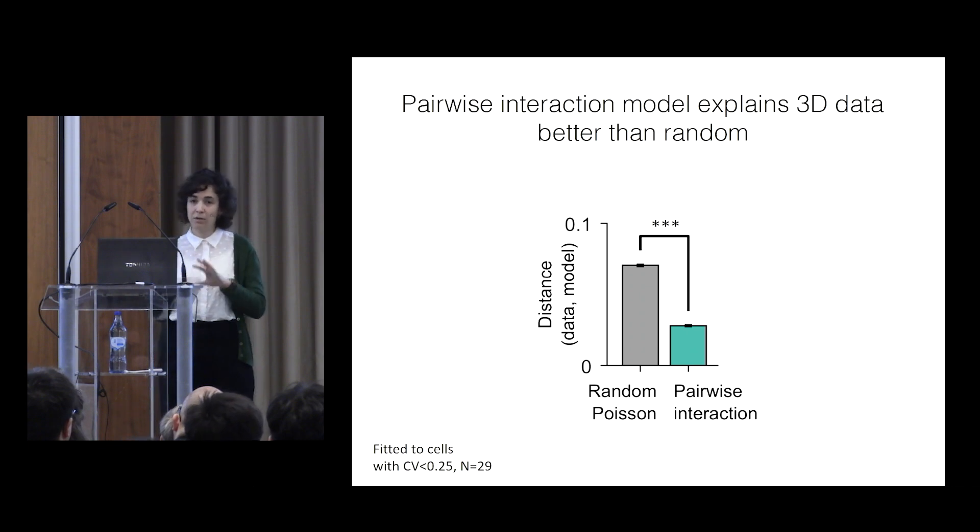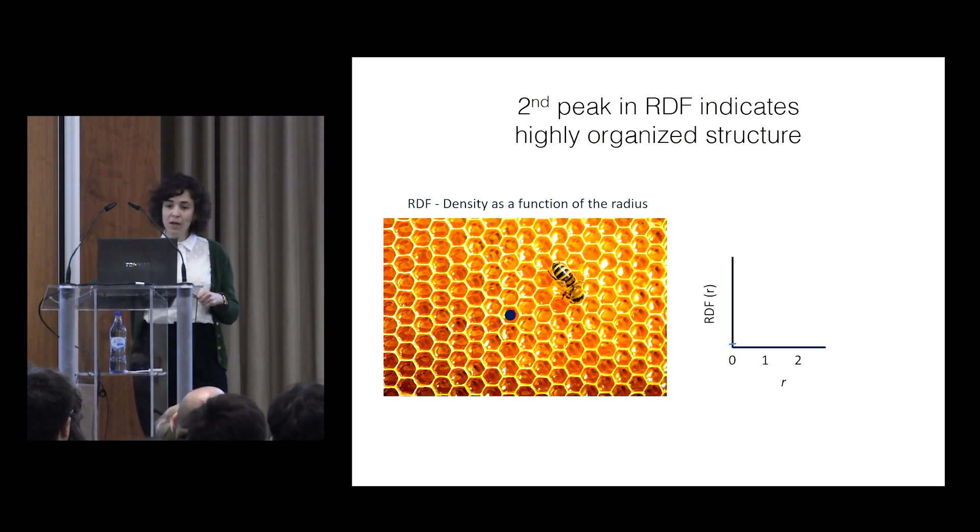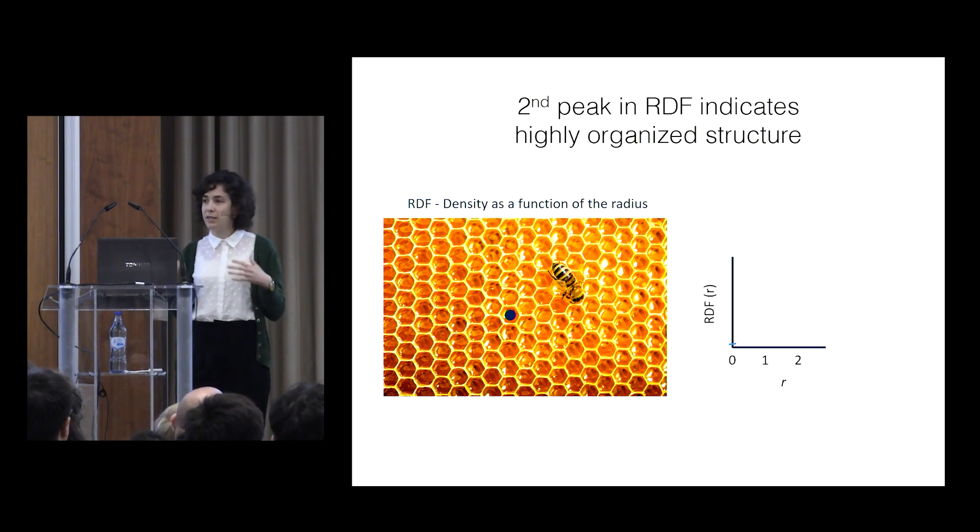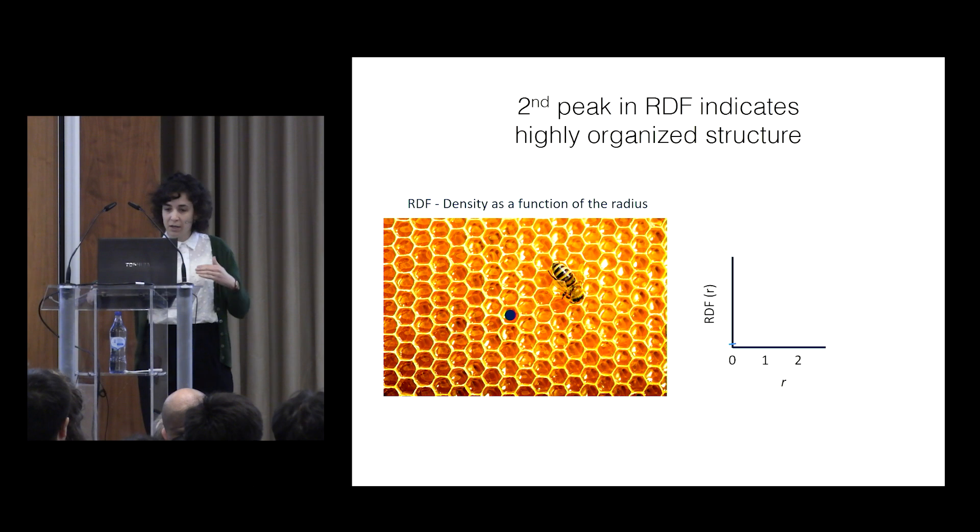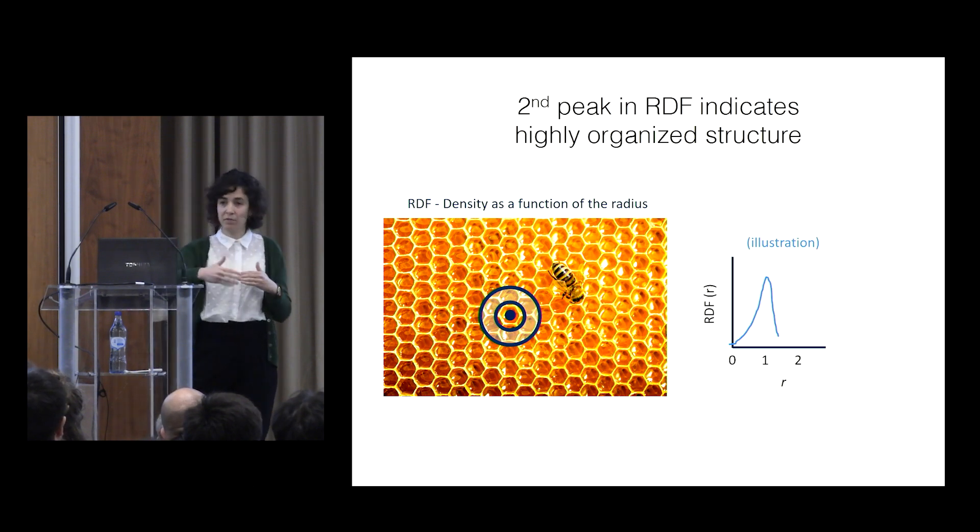Now we wanted to know whether our model can explain 2D data as well. So for that, we used the radial distribution function, which just means the density of the fields as a function of the radius. So since we're talking about systems with a characteristic distance between them, with a narrow distribution of distances, then we'll always have a, when we go to the radius of the first nearest neighbor, we'll always get a peak in density.